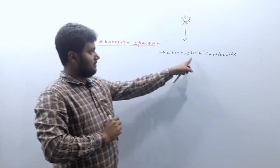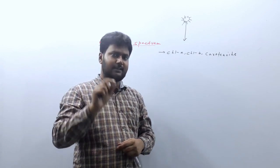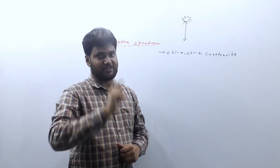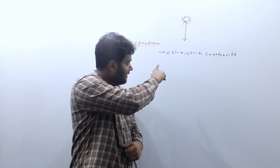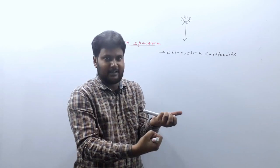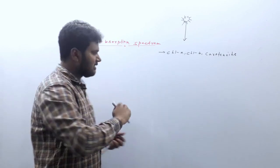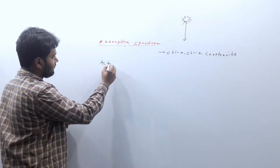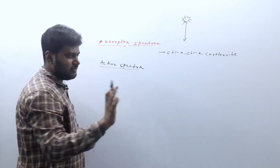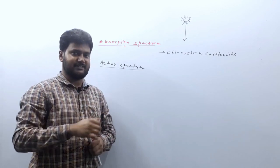So basically, absorption spectrum is what happens with some substance like pigments — substances which can absorb light have their own absorption spectrum. And what is the action spectrum? The action spectrum is not about a substance. This is about a process, like photosynthesis.